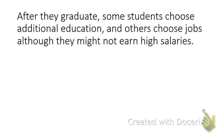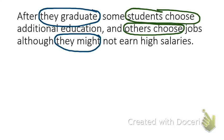Here is our fourth and final sentence: After they graduate, some students choose additional education and others choose jobs, although they might not earn high salaries. We see that we have four subject-verb combinations: they graduate, students choose, others choose, and they might. We also have some conjunctions in this sentence — the coordinating conjunction 'and,' and two subordinating conjunctions: 'after' and 'although.'